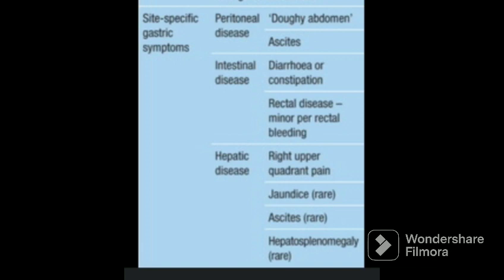Intestinal disease presents with an altered bowel habit which is diarrhea and constipation, along with which sometimes a minor per-rectal bleed may be present. In case of hepatic disease, right upper quadrant pain as well as rarely right upper quadrant swelling may be present, whereas jaundice, ascites, hepatosplenomegaly are rare findings.